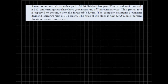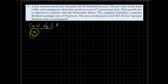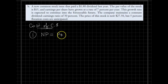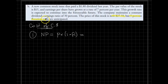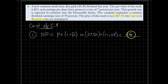For part B, the firm is issuing new common stock. When calculating the cost of a new common stock issue, the first step is figuring out the net price. We are told the price is $27.50, and 5% flotation costs are anticipated. Plugging in $27.50 and multiplying by (1 minus 0.05) gives us a net price of $26.13.